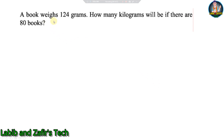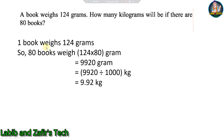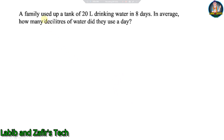Next problem: A book weighs 124 grams. How many kilograms will 80 books weigh? Solution: 80 books weigh 124 × 80 = 9920 grams = 9920 ÷ 1000 = 9.92 kg.